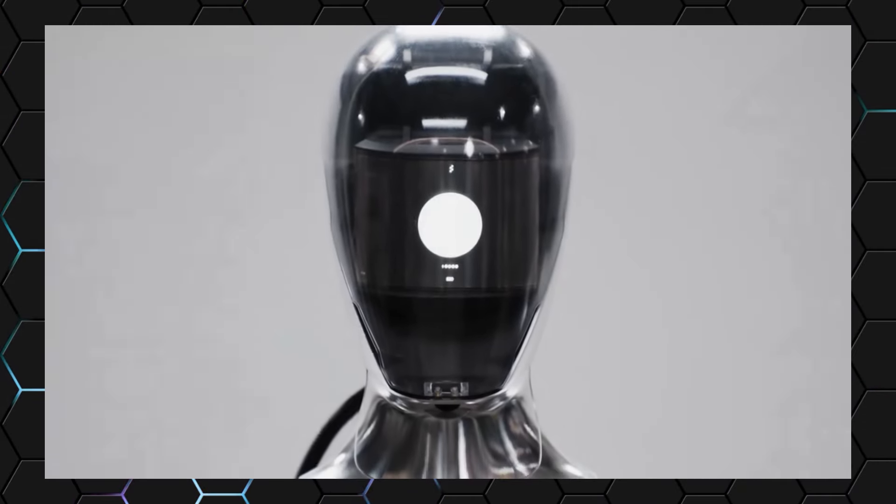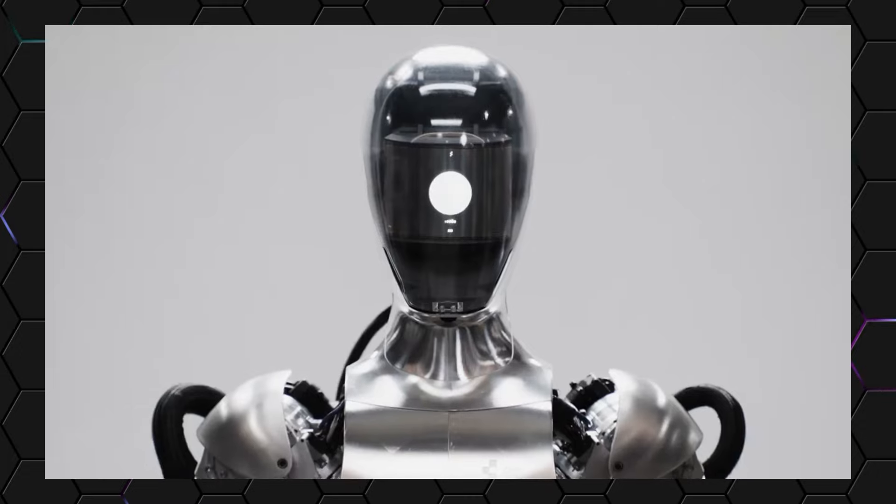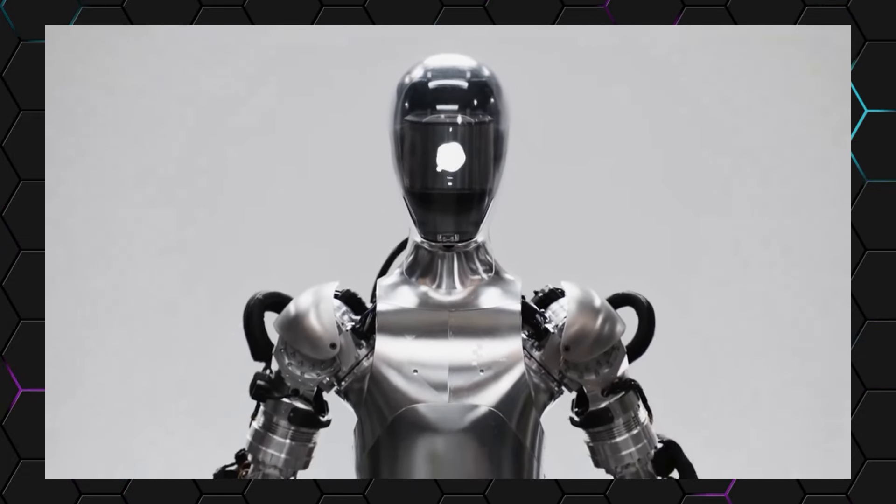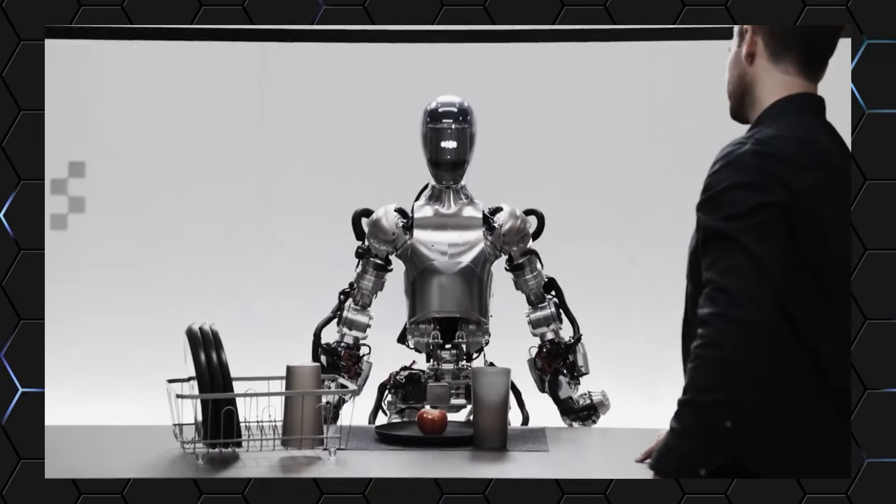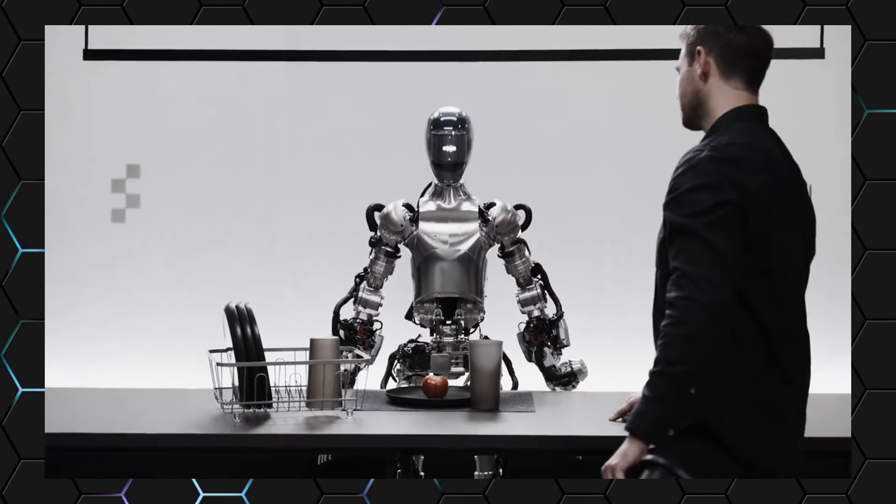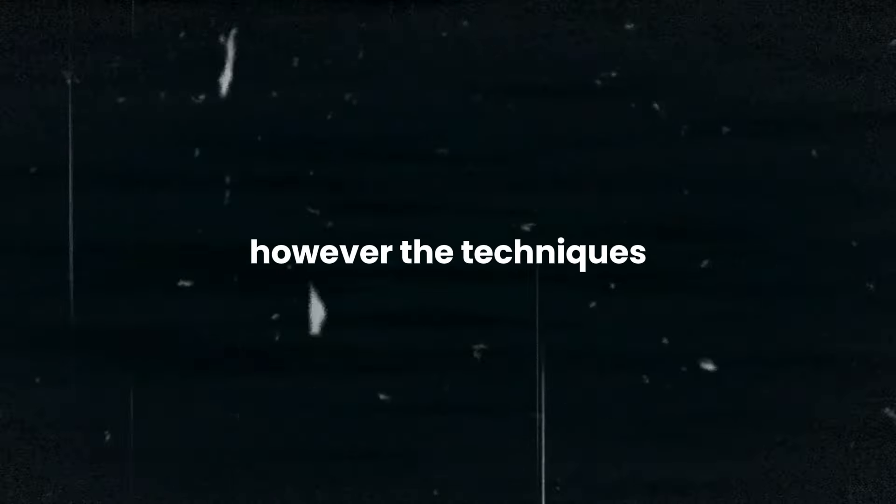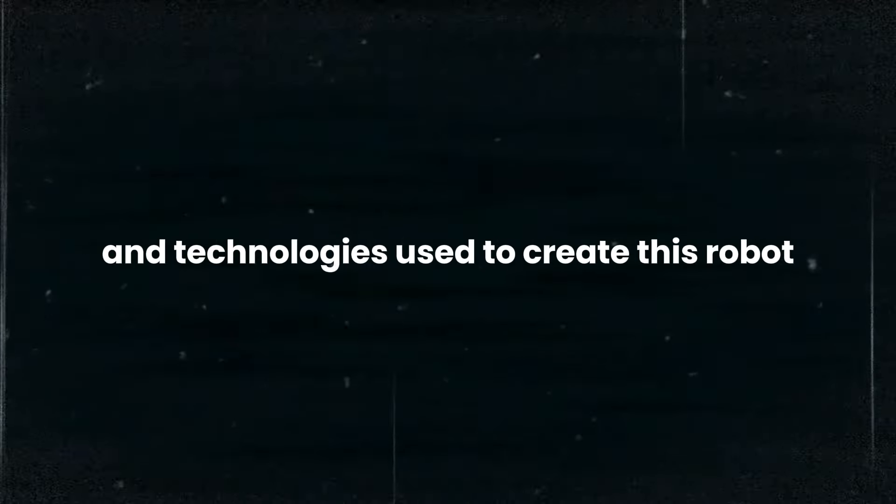So, does OpenAI's humanoid robot bring us closer to achieving AGI? While it is undoubtedly a significant advancement in terms of robot perception, reasoning and physical interaction, it is still a specialized application of AI, focused on a handful set of tasks. However, the techniques and technologies used to create this robot could potentially serve as building blocks towards the development of more AGI.